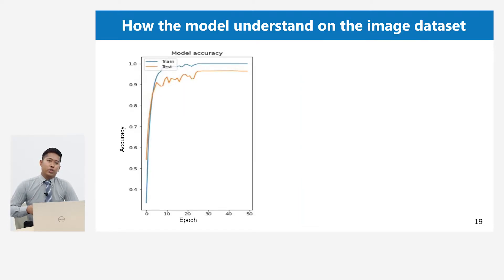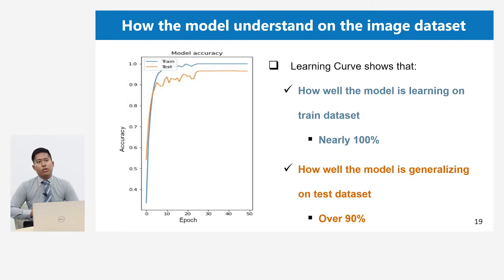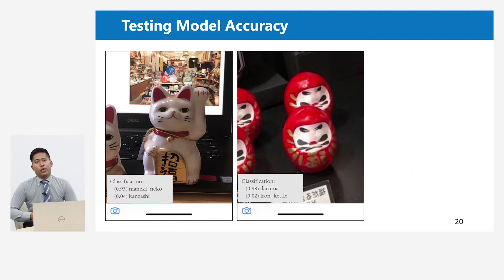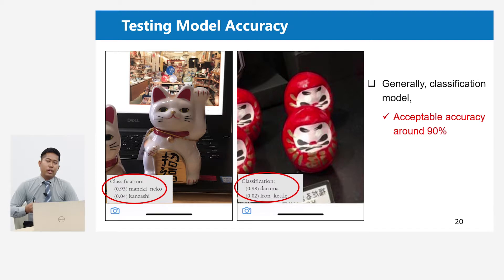After the training, I visualized my model accuracy. This graph is called a learning curve in machine learning. We can see in the graph that the blue line shows my model learns 100% on the training dataset, and the orange line shows my model understands over 90% on the test dataset. Many research papers describe that if we achieve accuracy around 90%, it is acceptable.